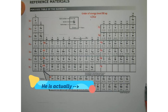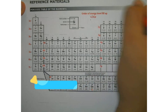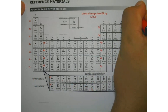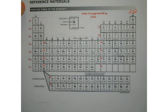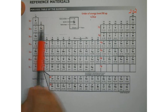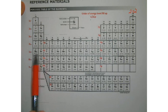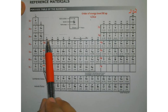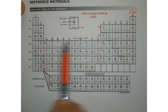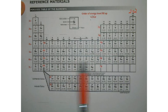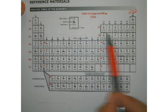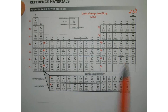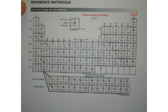Helium is what we call 2S2. Our S's are found on groups one and two — those are your S's. From groups three to twelve, you find your D's — all those elements are D's. All the elements on the right side are your P's, and the two rows at the bottom are your F's.